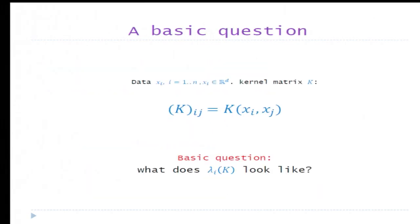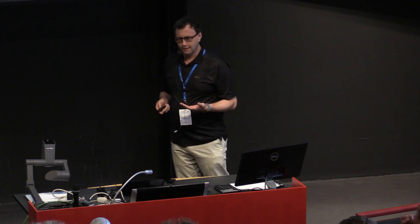Now if you have a kernel function, then the most basic object you have associated to your data is a kernel matrix. The kernel matrix, simply for each pair of your data points, you take K of xi, xj, and you construct a matrix. This is a positive definite symmetric matrix, as we all know. And the most basic question about that is, what do eigenvalues of that kernel matrix look like?